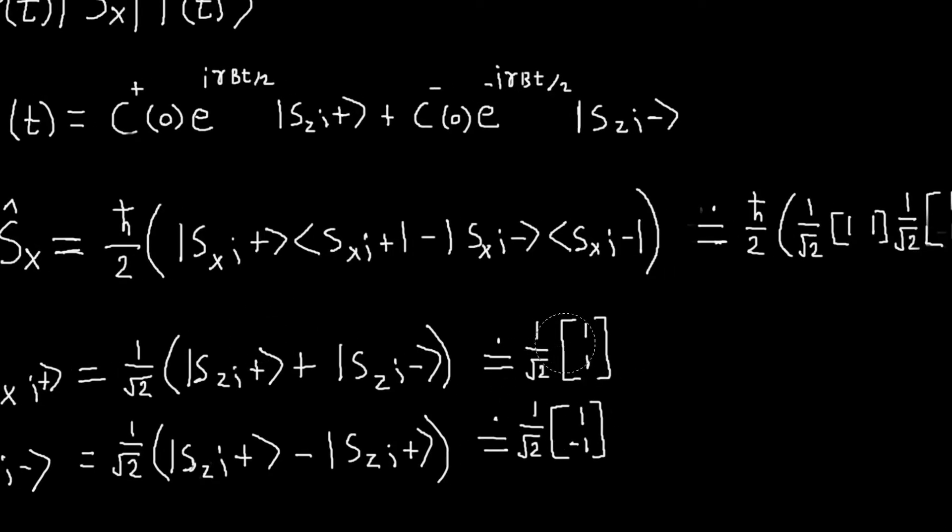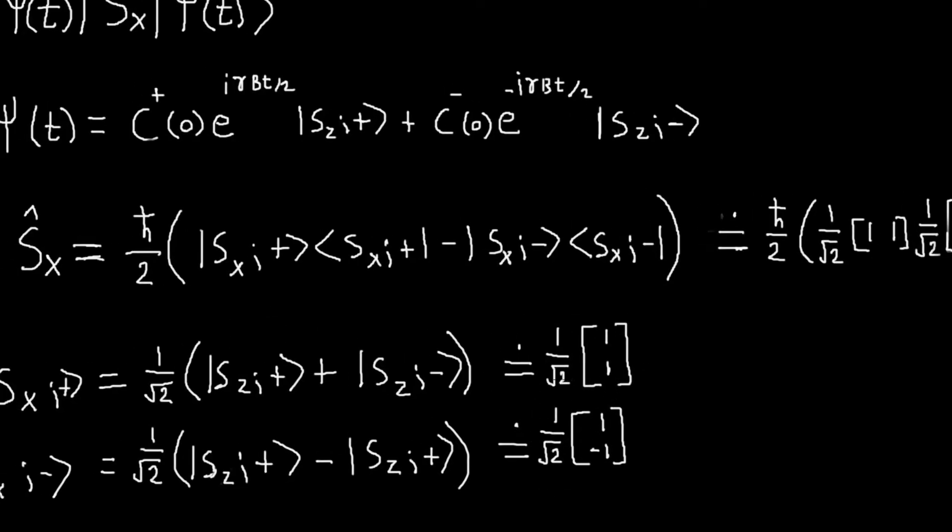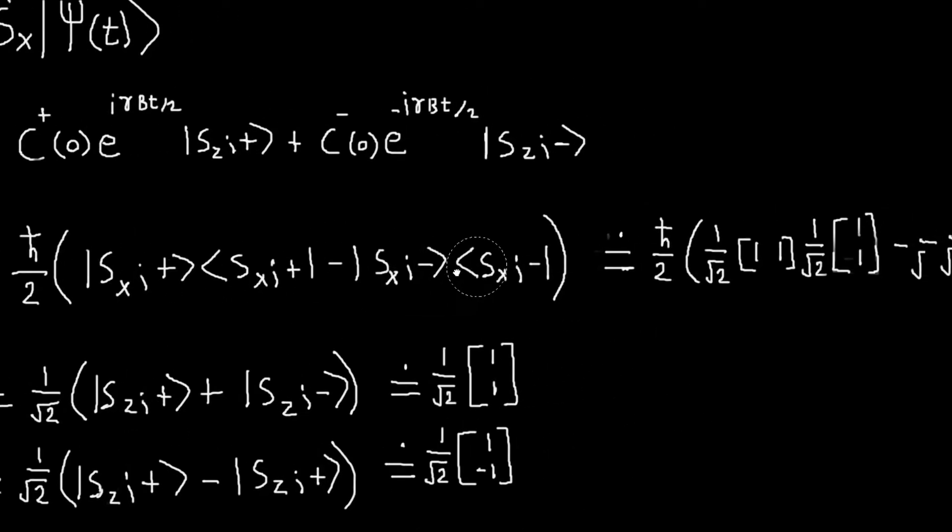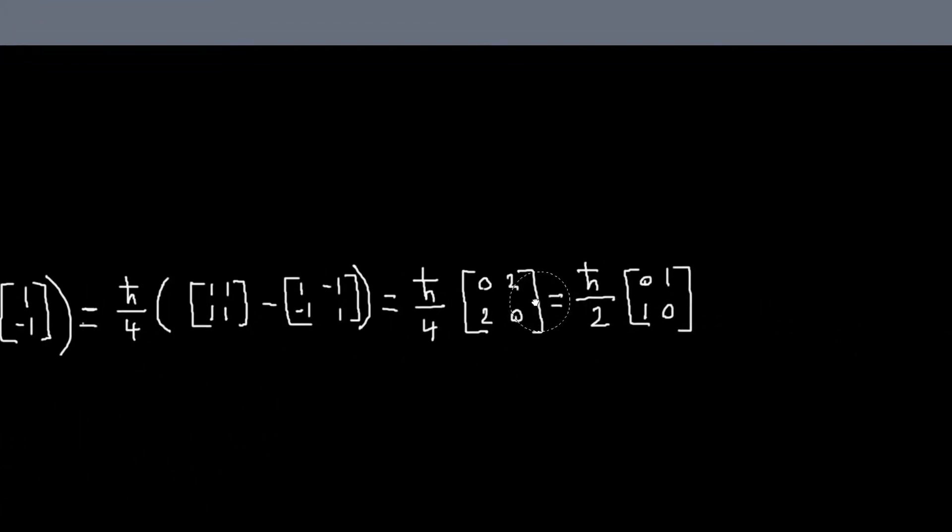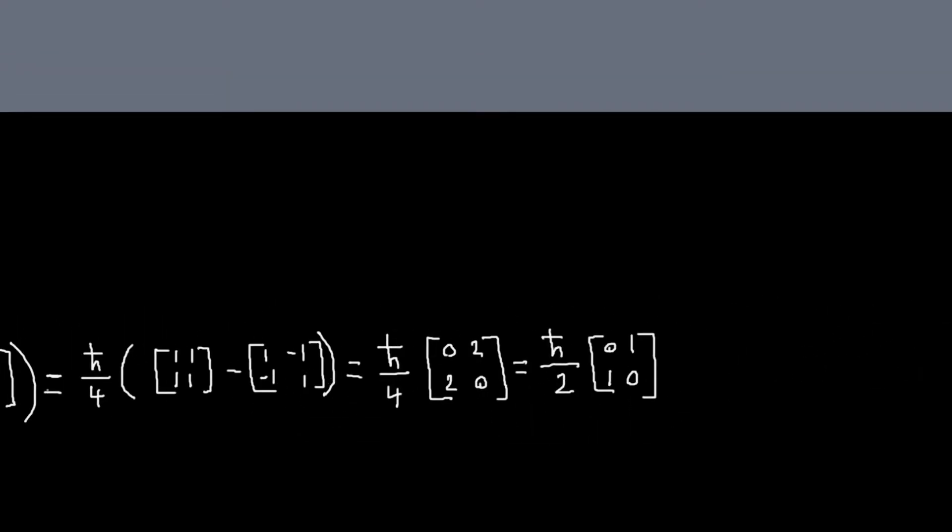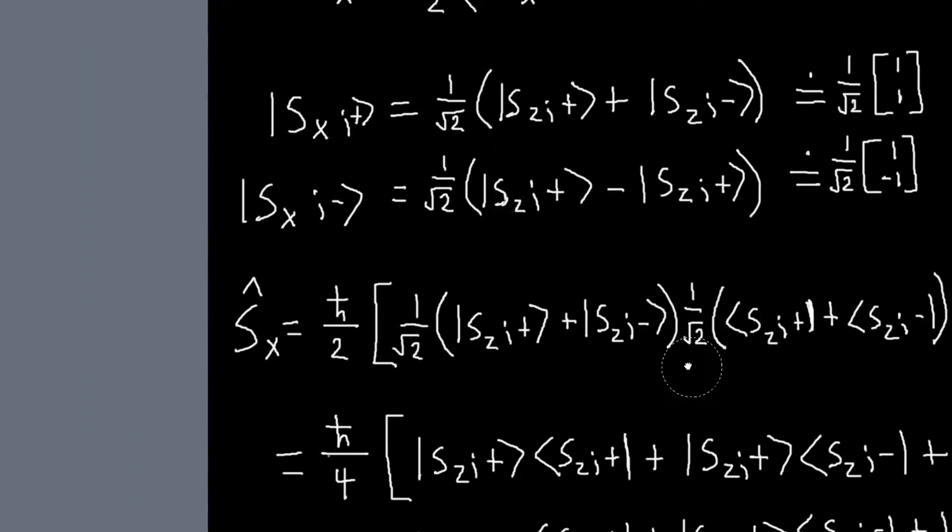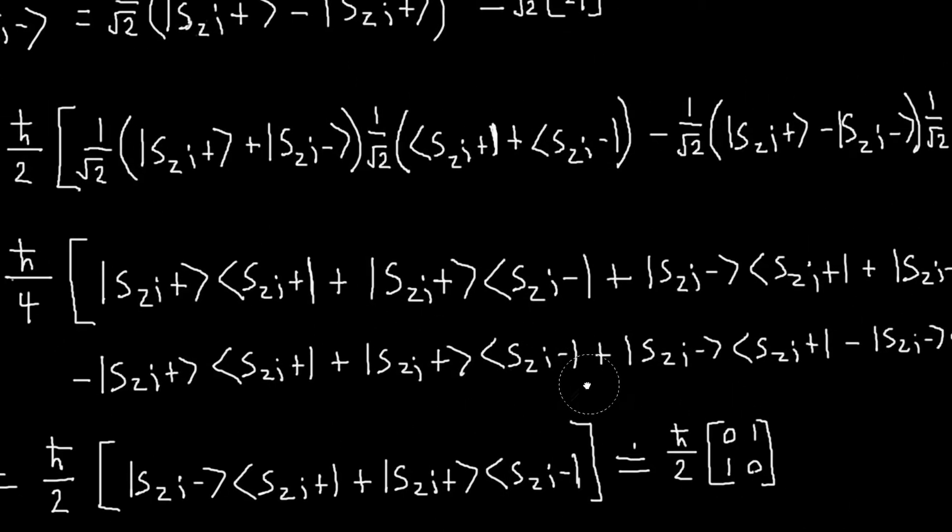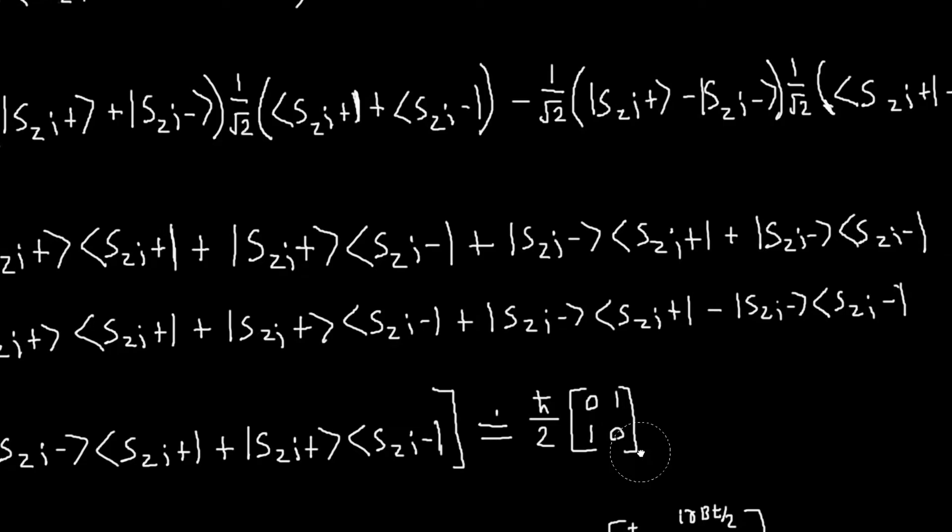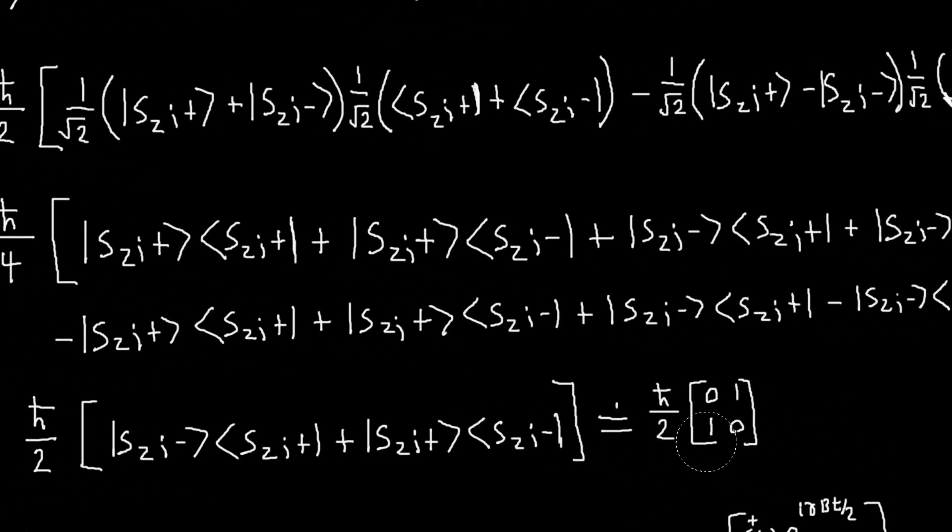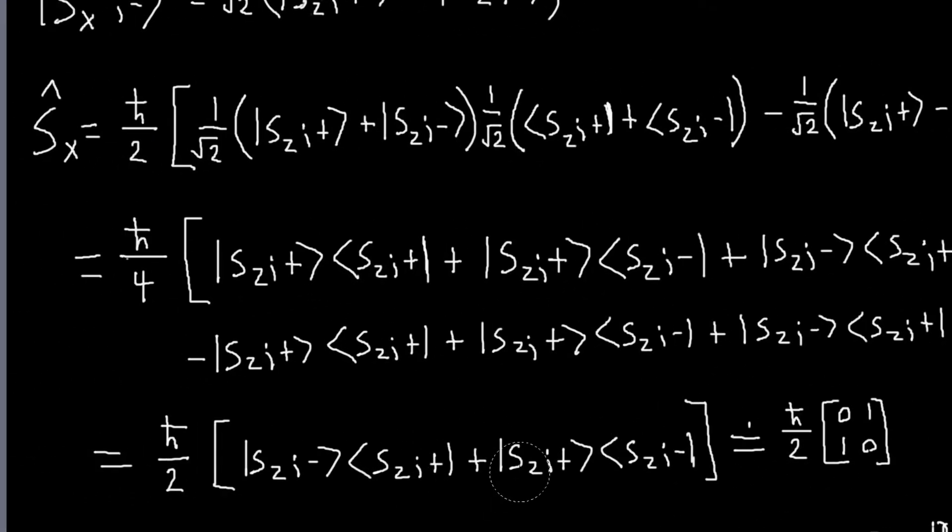And so we can use these representations of our Sx kets to compute these outer products, and if you work it out, you will get the same matrix. So again, it's just much quicker to work in representations than to do all the ket algebra, but either way you want to do it, you can do it. And the answer you get is the same either way. So we have our Sx operator expressed in terms of our Sz basis, so now we can compute the expectation value of Sx in our state.